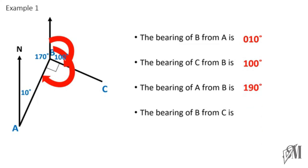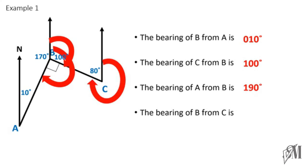For the bearing of B from C, draw the north line at C. The angle on the near side is 80° (since 100 + 80 = 180). But we measure clockwise from north, so the bearing is 360 − 80 = 280 degrees. The bearing of B from C is 280 degrees.